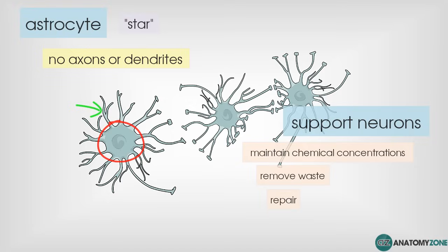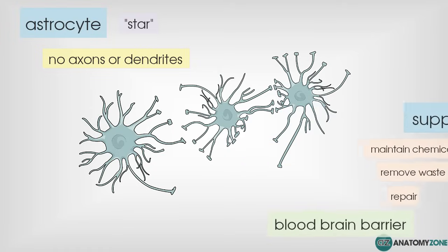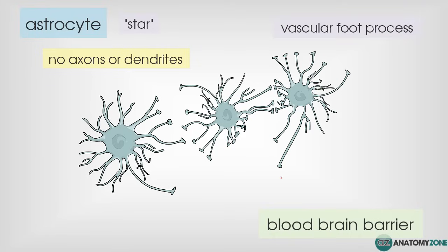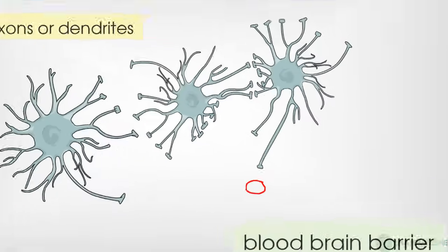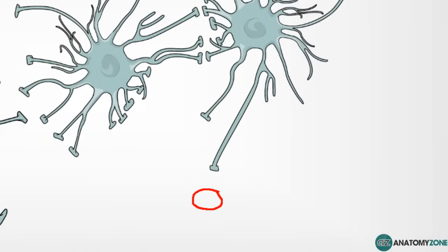Another crucial function of the astrocyte is its contribution to the blood-brain barrier. The brain is a protected organ — substances circulating within the blood can't just enter the central nervous system at will. The astrocytes have vascular foot processes which can wrap around capillaries to provide this blood-brain barrier. You might have the foot process of one astrocyte, and another astrocyte's foot process wrapping around to form a complete barrier.